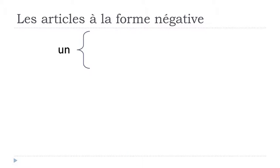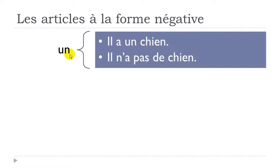Let's see the example for the article indéfini at the masculine form: 'un.' For instance: il a un chien — he has a dog. If you want to transform this sentence into the negative form: il n'a pas de chien. So 'un' becomes 'de' in the negative form.